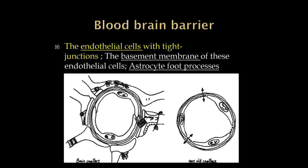The brain has a very important barrier called the blood-brain barrier that seals off the brain from toxic substances, and there are three layers. The most important are the endothelial cells, which have tight junctions — any ordinary capillary tends to be rather leaky, but these tight junctions are most important. There is also a basement membrane, and there are astrocyte foot processes around the blood vessels, which contribute as well.